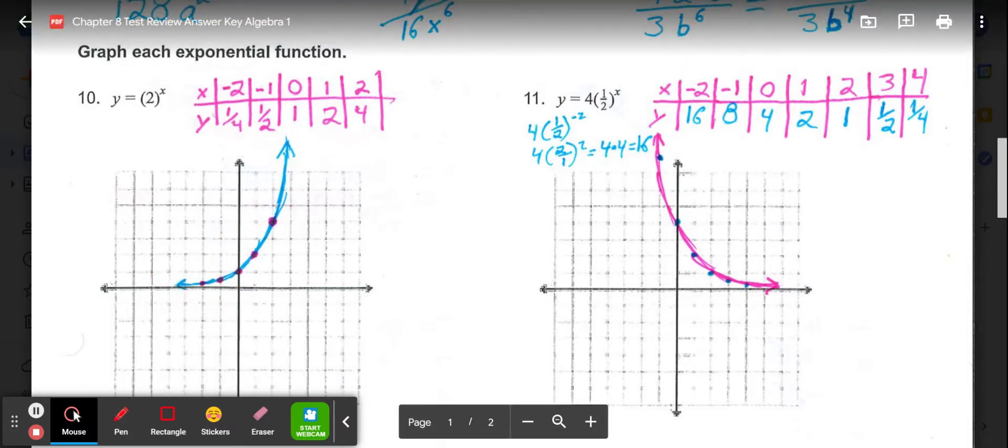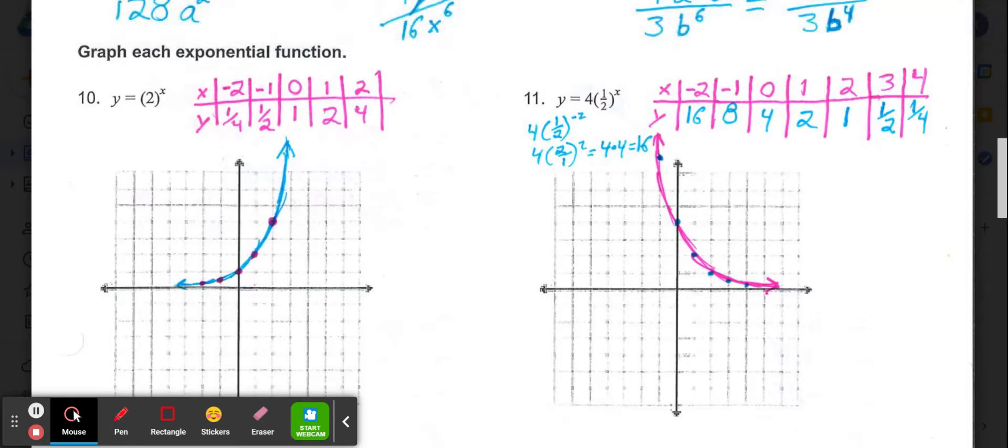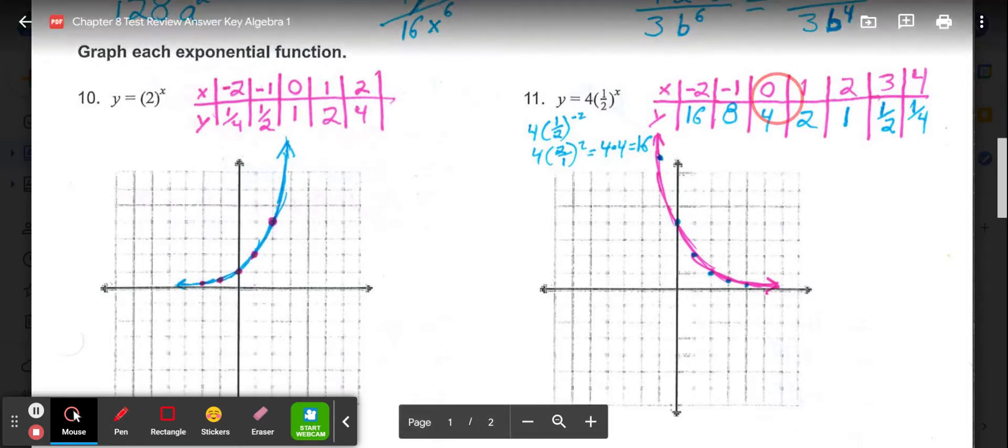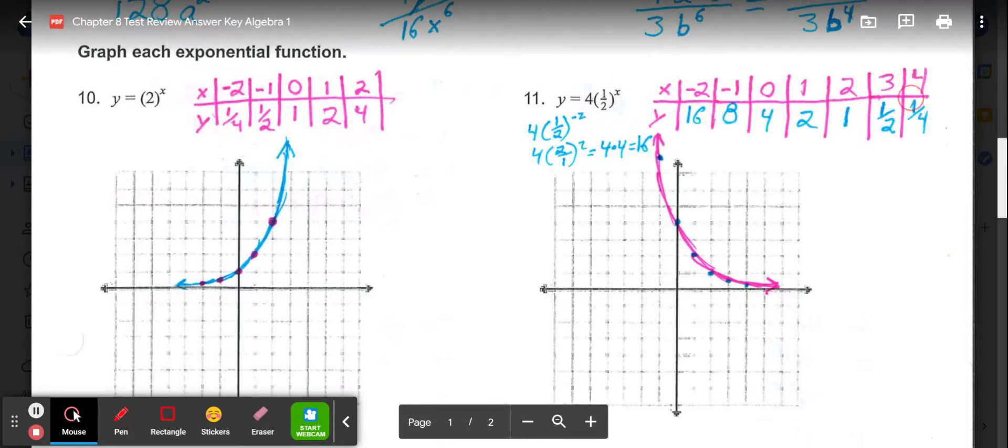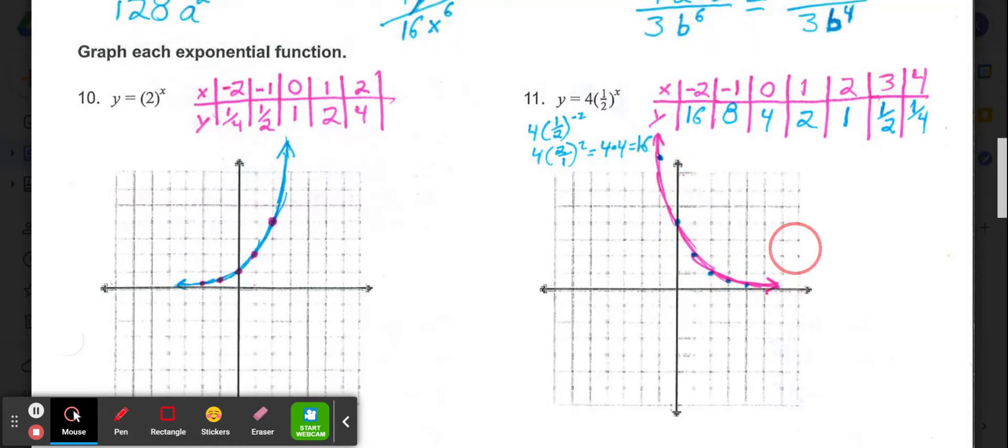In 11, again we need at least 5 points to see the curve. So I would use 0, 1, 2, negative 1, and negative 2. You can see I used a few extra points here. So then to properly do this, you would do 1 half to whatever power you're putting in for x, and then multiply it by 4. So you have to do the power first. Then you can see the points that we get. Plot your points and connect them to get your curve.